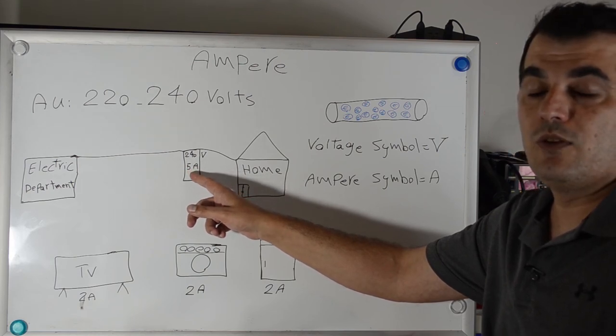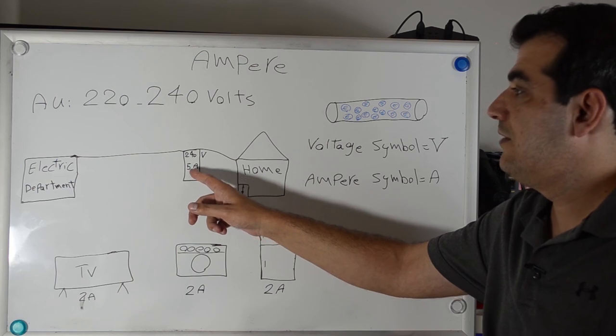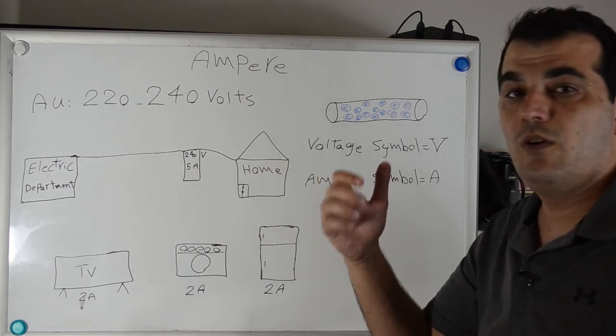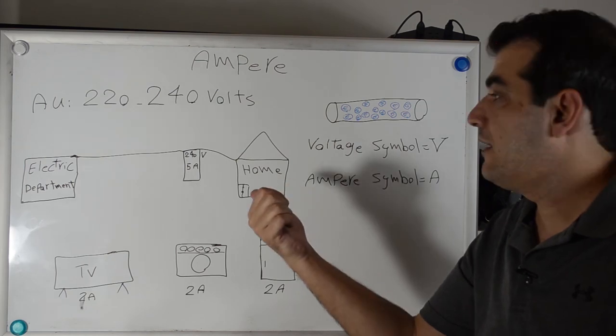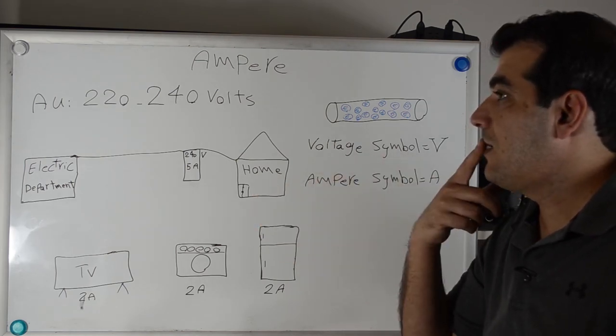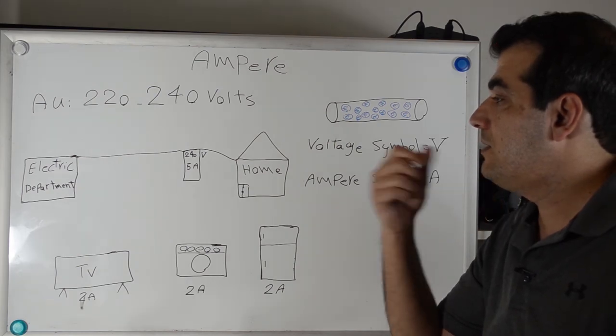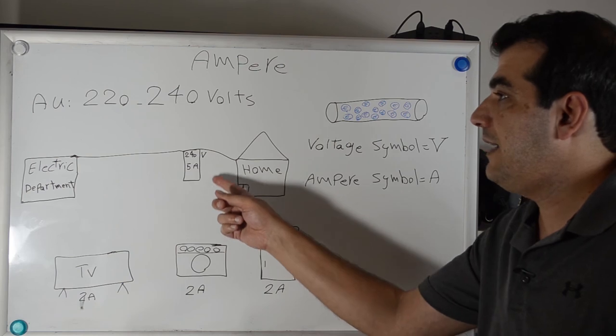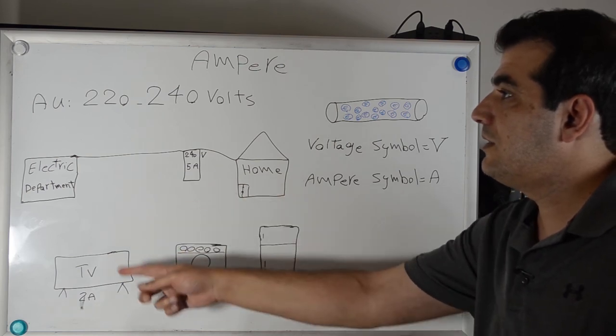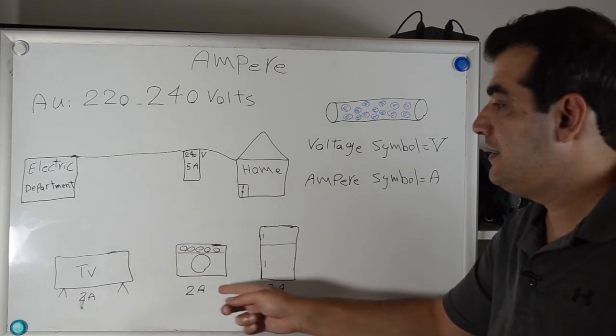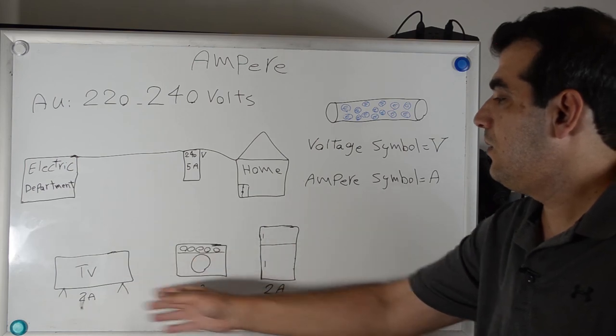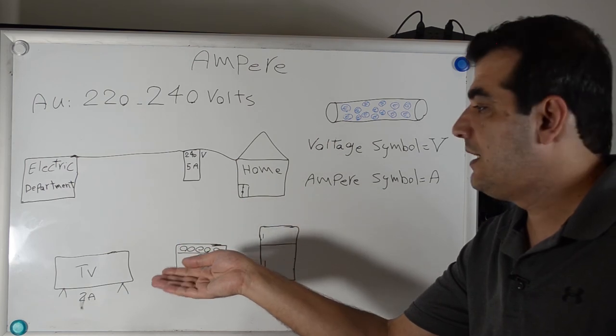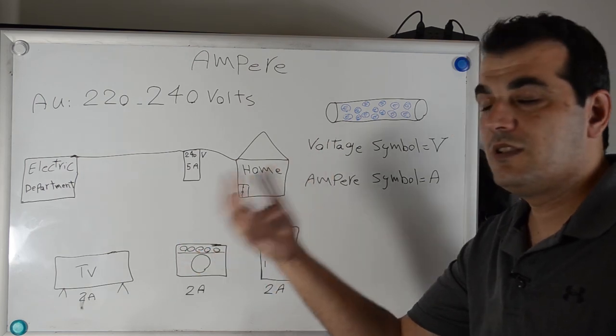On the bottom, it's written your home power electricity, for example 5 amps. Your home power electricity is 5 amps. Now suppose your home circuit breaker is 5 amps and you start turning on your home appliances.